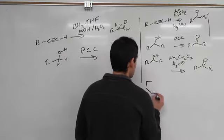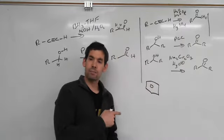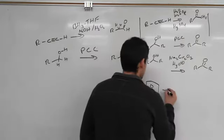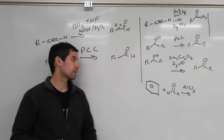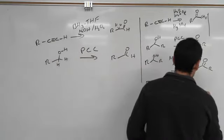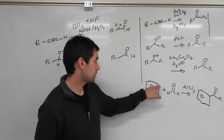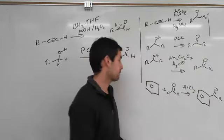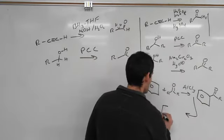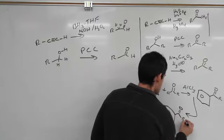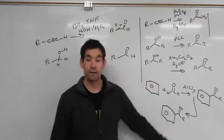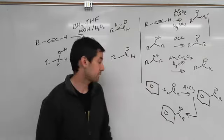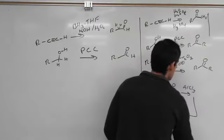Another method we recently learned is taking a ring structure and putting a carbonyl on it. We can react it with a carbonyl acid chloride and AlCl3 — that's Friedel-Crafts acylation. It takes the acid chloride and attaches it to the ring. Now we have a ketone where one side has a benzene ring attached and the other has an alkyl group. That's what we can make using AlCl3 and an acid chloride.